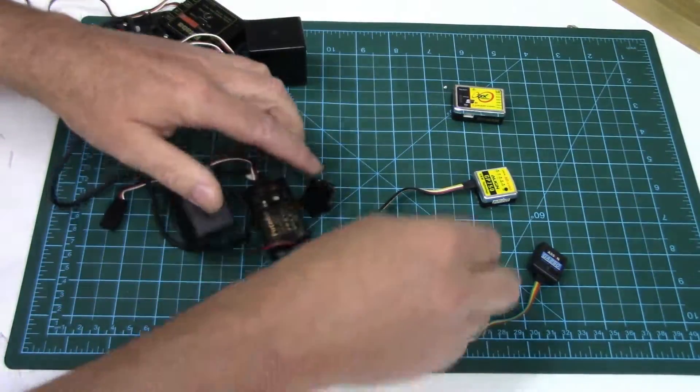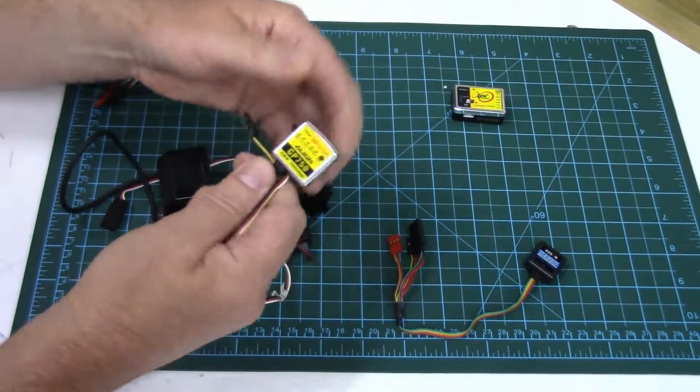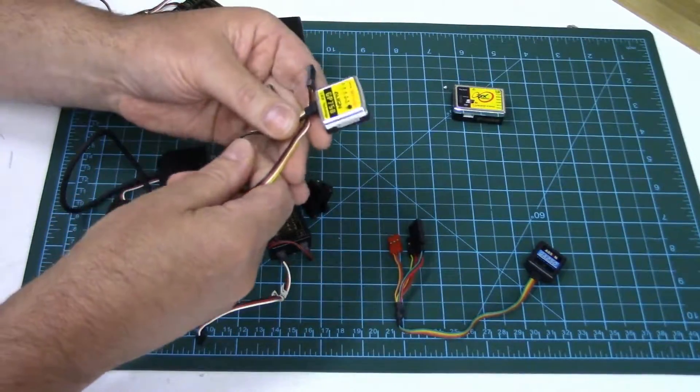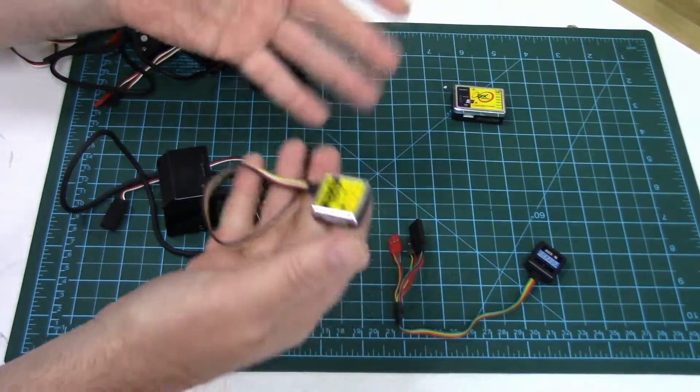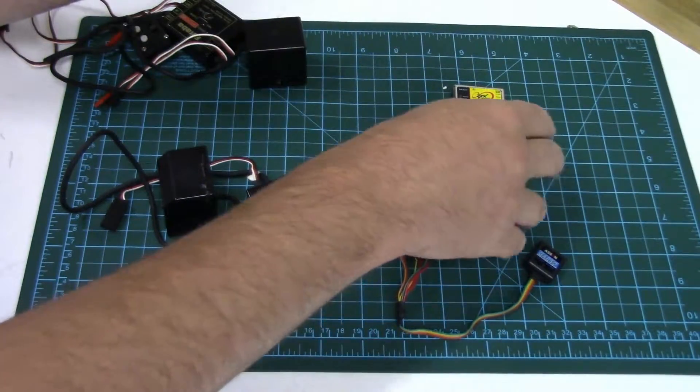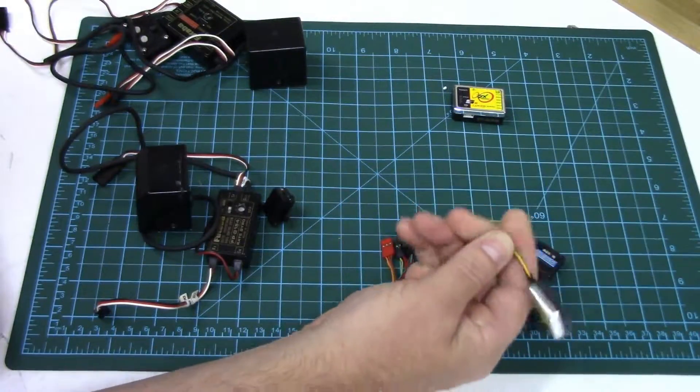Whereas today's newer vibrating structure gyroscopes or MEMS gyroscopes weigh about 10 to 15 grams, essentially one tenth the weight. These have got heading lock technology, these were just yaw rate.